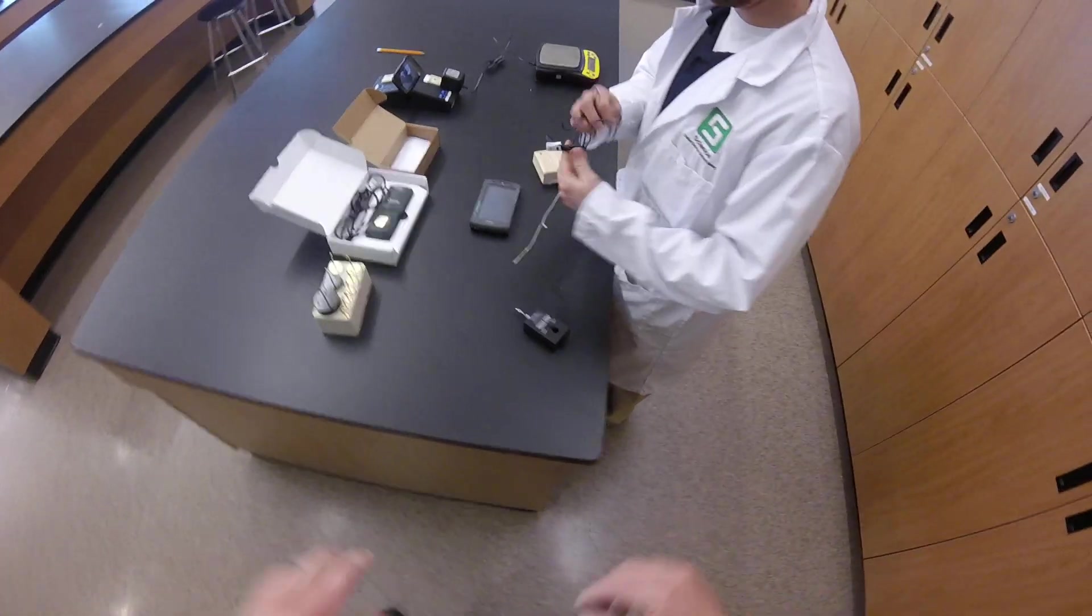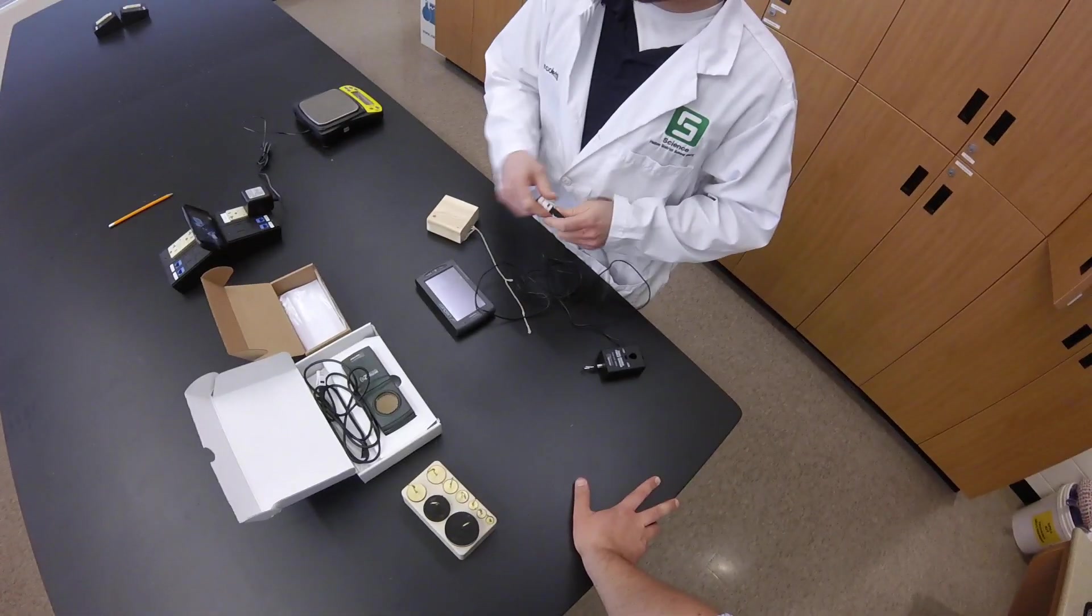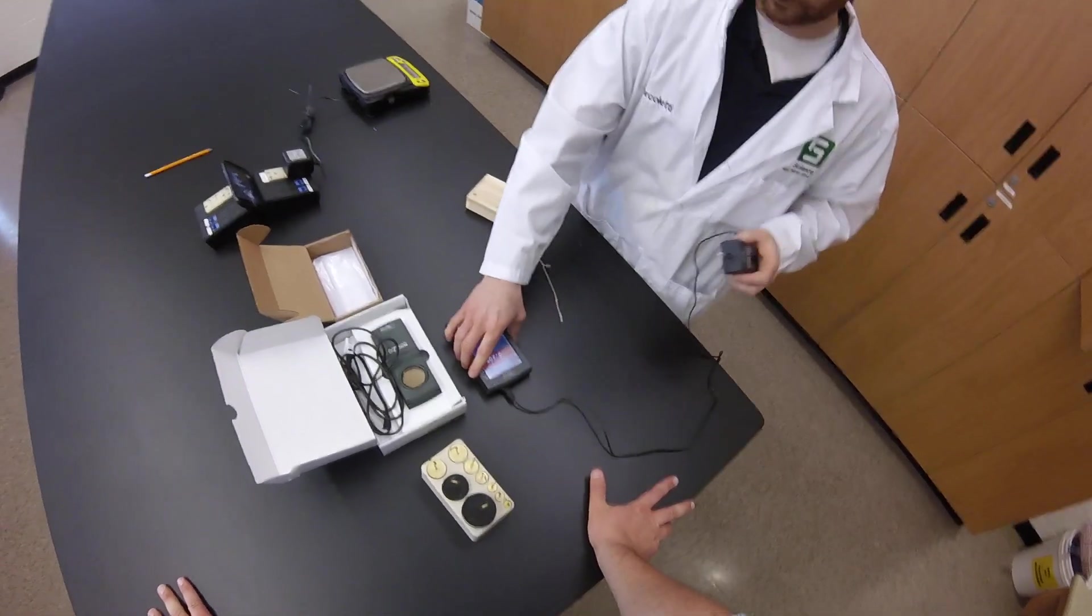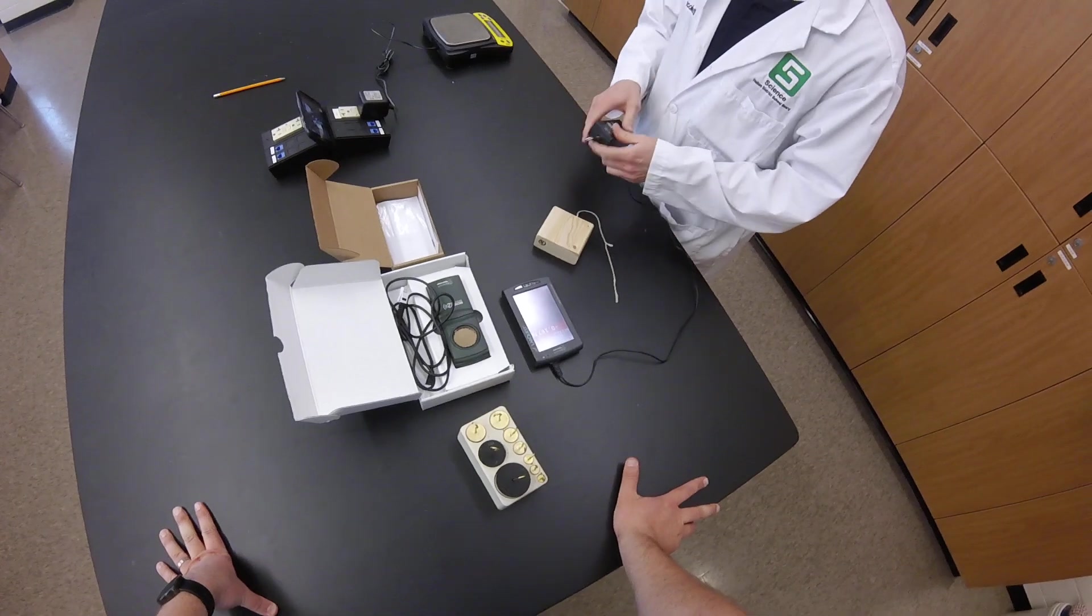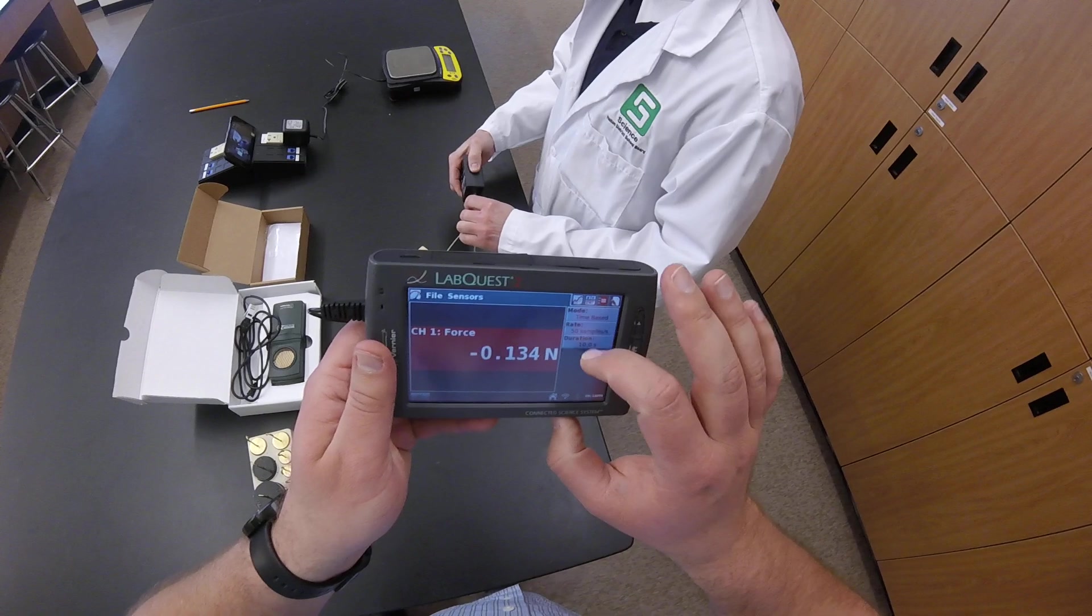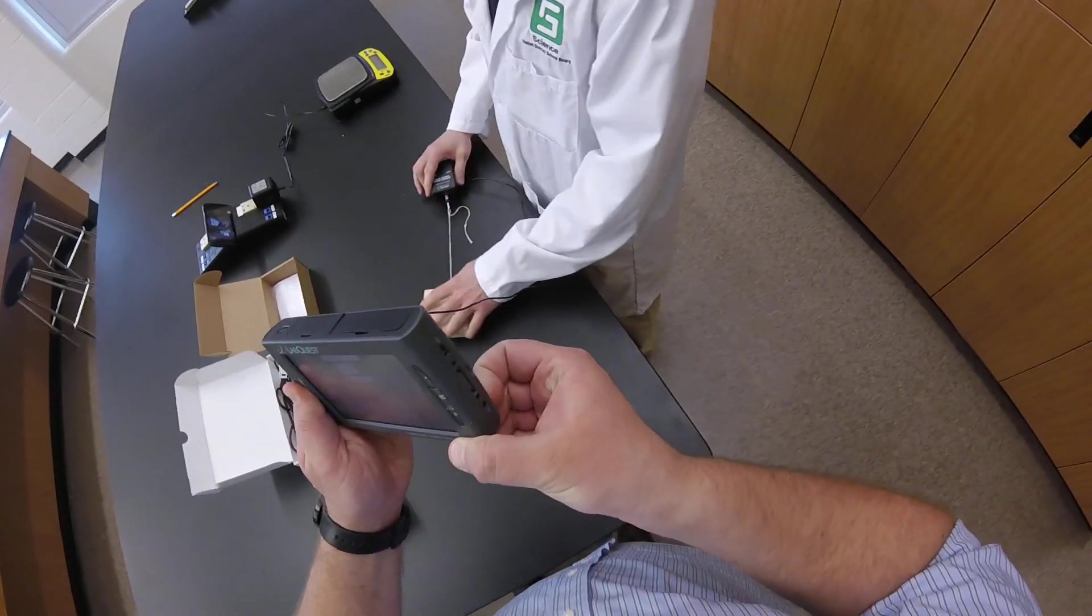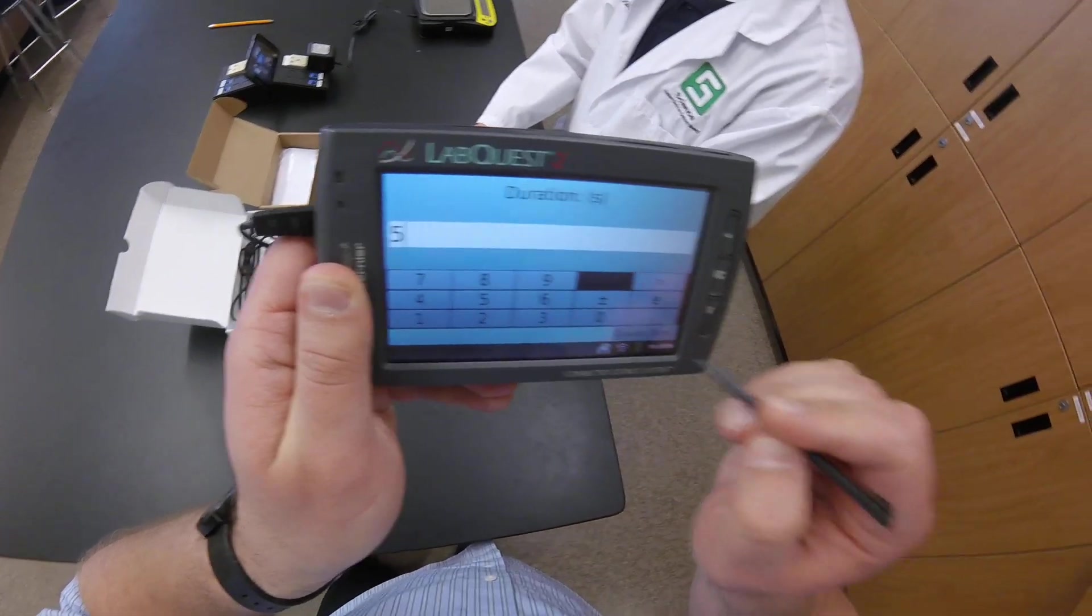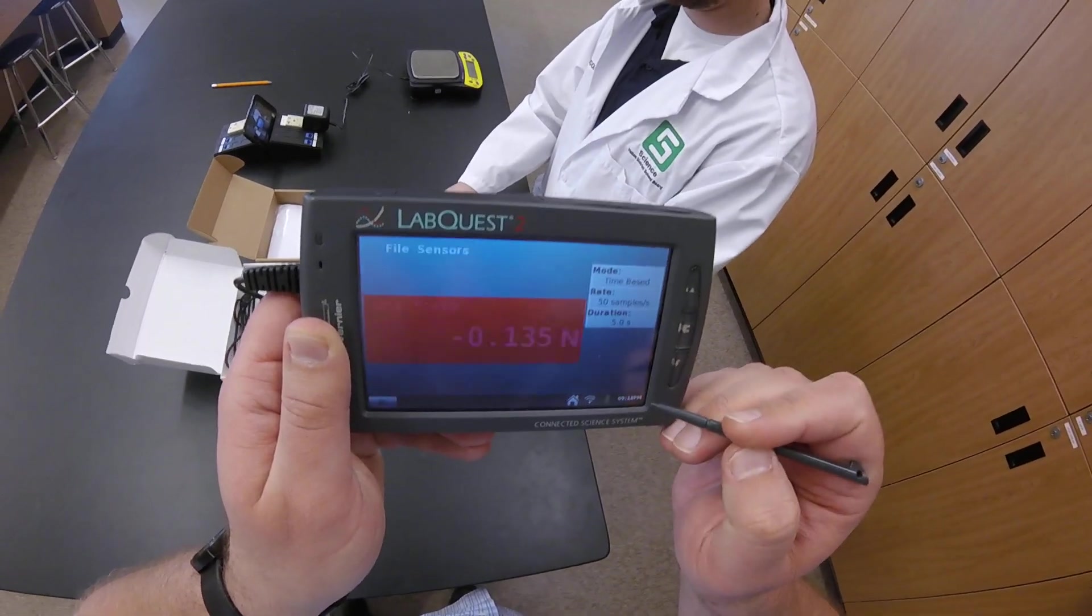And what you're going to observe is Mr. Torcoletti is going to pull on the block. And when we get the data, something might surprise you. And that's what we're going to be looking at today. So we're going to change our duration to five seconds and leave it at 50 samples a second. We're going to hit okay.